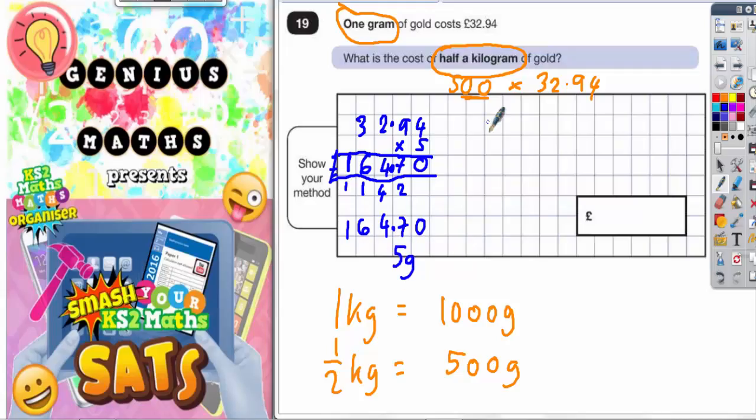But we want 500 grams. And 5 grams times by 100 would give us 500 grams. So what we need to do is times this answer by 100.